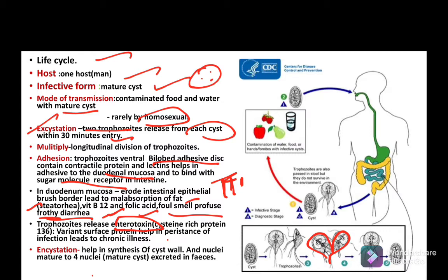During encystation, the process helps in synthesis of the cyst wall and the nucleus matures to four nuclei, forming a cyst which is excreted in the feces. It survives in the environment and is the infective form for man.